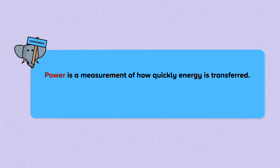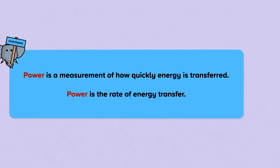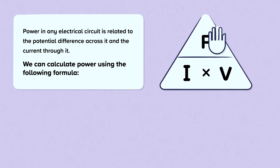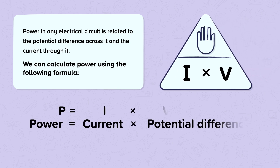We should also remember that power is a measurement of how quickly energy is transferred — power is the rate of energy transfer. Power in any electrical circuit is related to the potential difference across it and the current through it. We can calculate power using the following formula: power is equal to current multiplied by potential difference, with the units of power being watts, the units of current being amperes, and the unit of potential difference being volts.